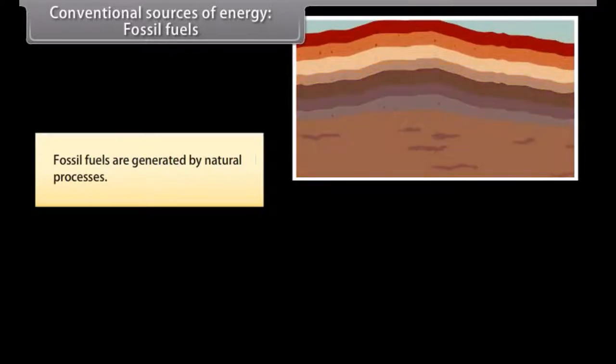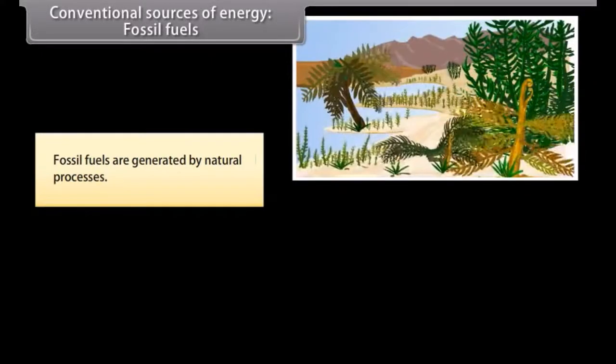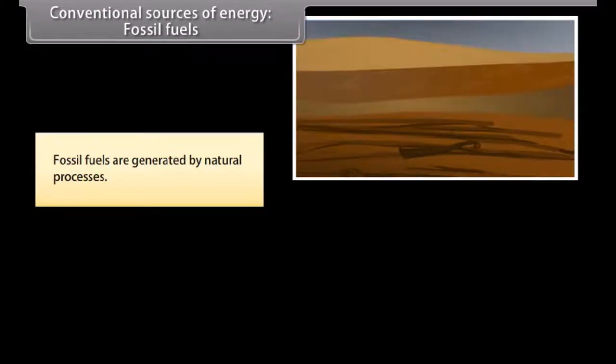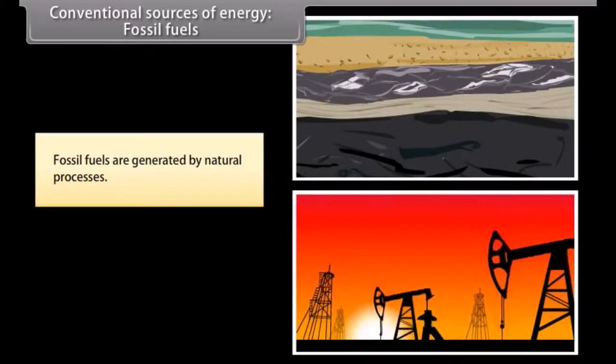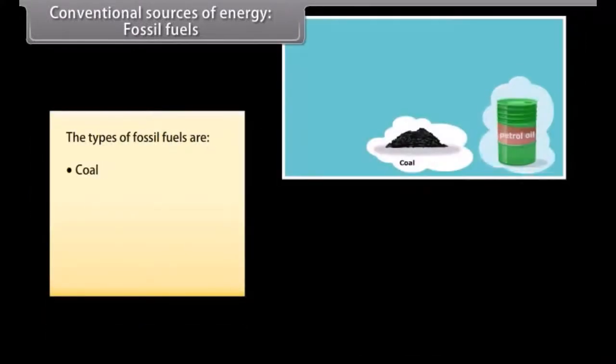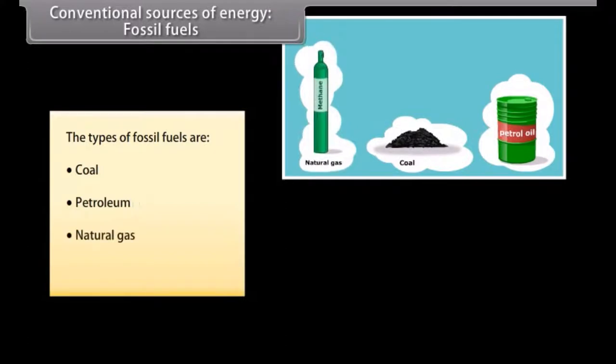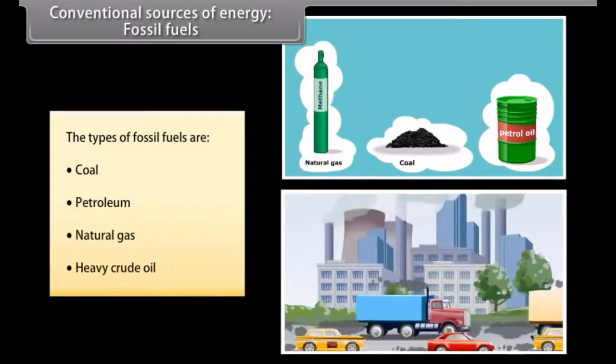Conventional sources of energy: Fossil fuels. Fossil fuels are generated by natural processes and include a high percentage of carbon. These are non-renewable sources of energy as they take millions of years to form. The reserves of these fuels are reducing at an alarming rate. The types of fossil fuels are coal, petroleum, natural gas, and heavy crude oil.